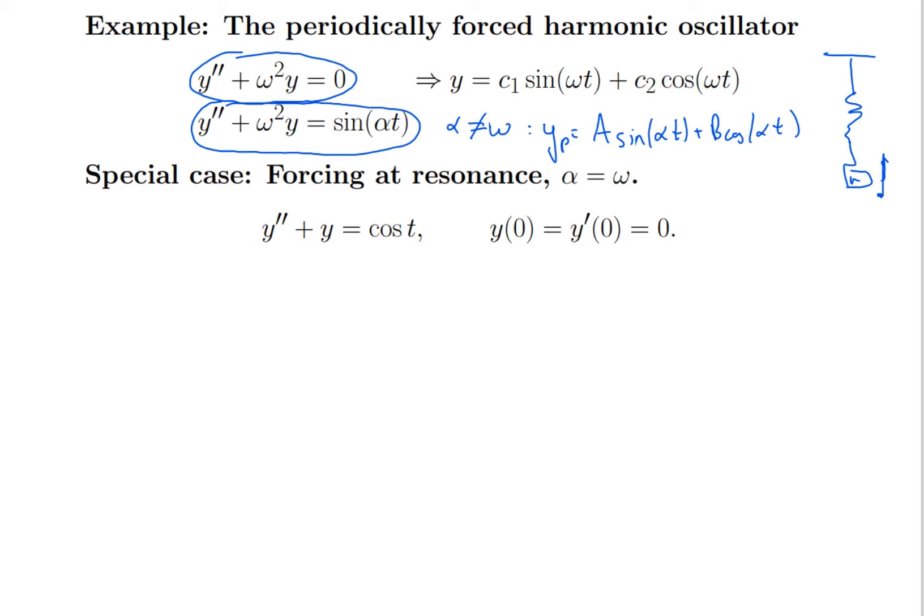The important special case is called forcing at resonance — when the forcing frequency equals the natural frequency ω of the system. Setting ω = 1 to reduce variables, the homogeneous solutions are sin t and cos t, and one of them appears on the right hand side. I'll do an initial value problem: the oscillator starts at rest, y(0) = 0, with zero initial velocity y'(0) = 0, but it is being forced.